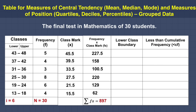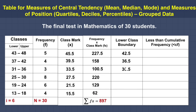Next, let us complete the lower class boundary, which is used in solving median, mode, and measures of position. To get the lower class boundary, subtract the lower value by 0.5. So: 43 minus 0.5 equals 42.5; 37 minus 0.5 equals 36.5; 31 minus 0.5 equals 30.5; 25 minus 0.5 equals 24.5; 19 minus 0.5 equals 18.5; and 13 minus 0.5 equals 12.5.